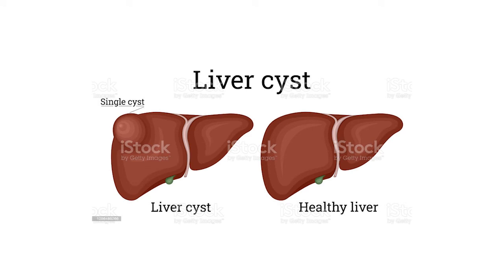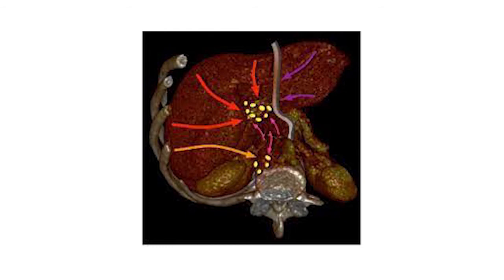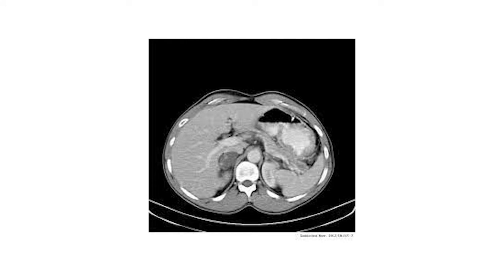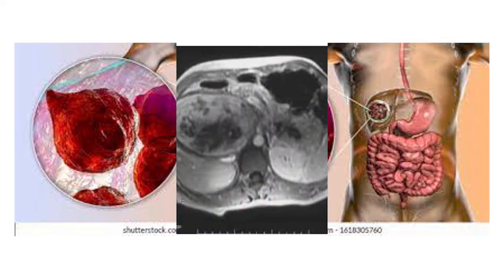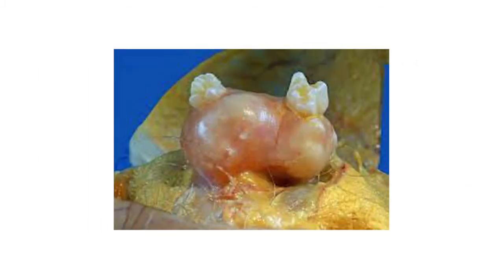On screen you can see a solitary cyst, and another slide shows a CT scan image with multiple cysts in the liver. A third slide shows the lymphatic cyst, a fourth shows the endothelial cyst, and the next slide shows the blood and degenerative cyst. Further CT scan images show the dermoid cyst of the liver.